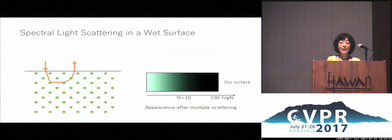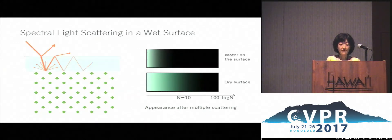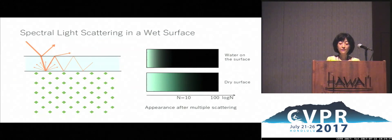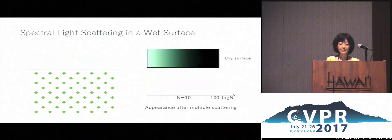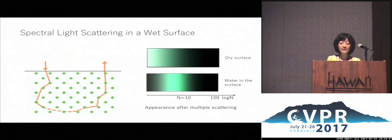Then, what happens when the surface gets wet? In the case of water film on the surface, we find that the total internal reflection at the film-air interface exponentially decays, leading to negligible colour change. The much more dominant effect of appearance change comes from the water absorbed by the surface.